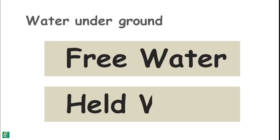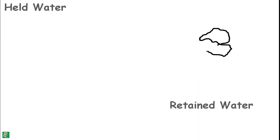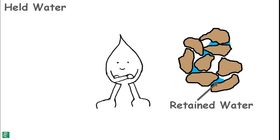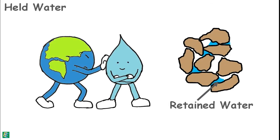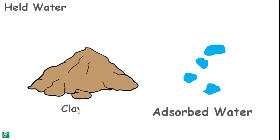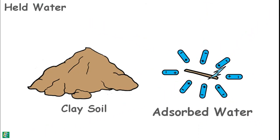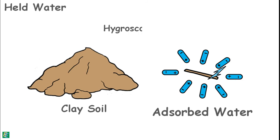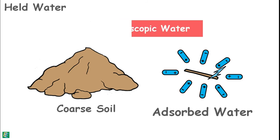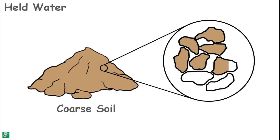The held water is the retained water in the pores which cannot move under the influence of gravitational force. This water can be adsorbed water if the soil is clay. In case of clay soils, adsorbed water is held by electrical charges possessed by the minerals of the soil. The electrically attached water is also called hygroscopic water. For coarse-grained soils, the amount of adsorbed water is negligible or zero.